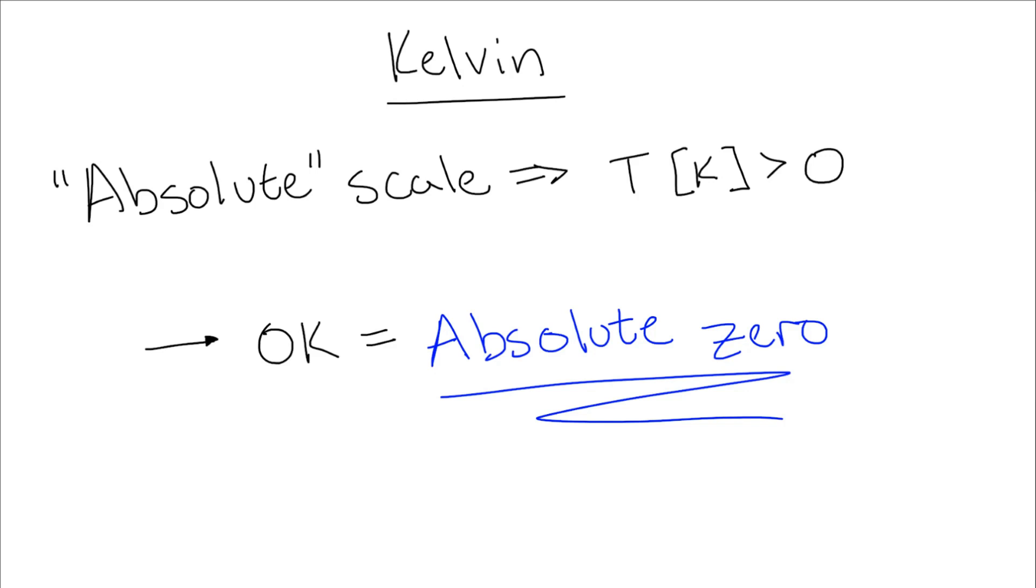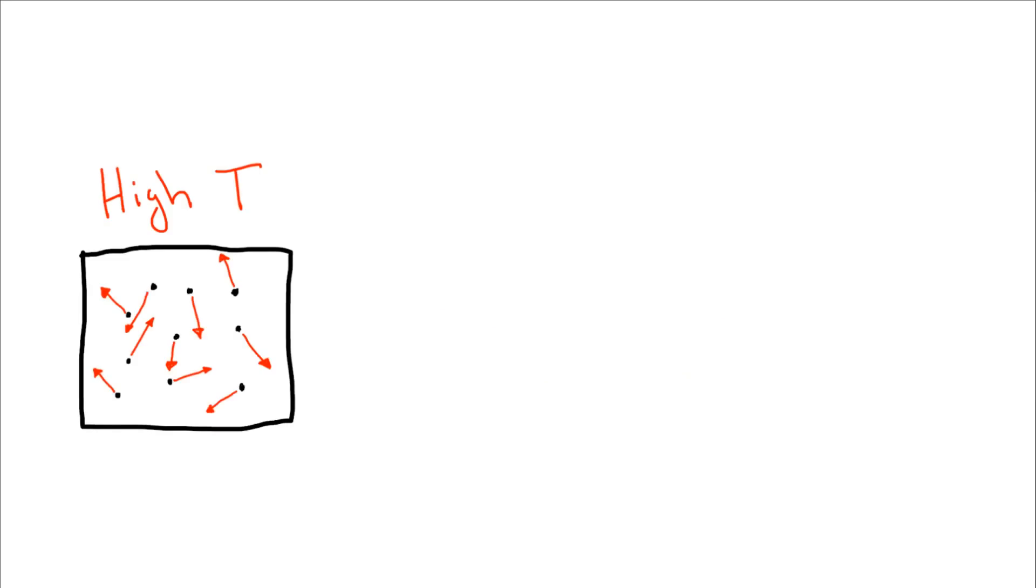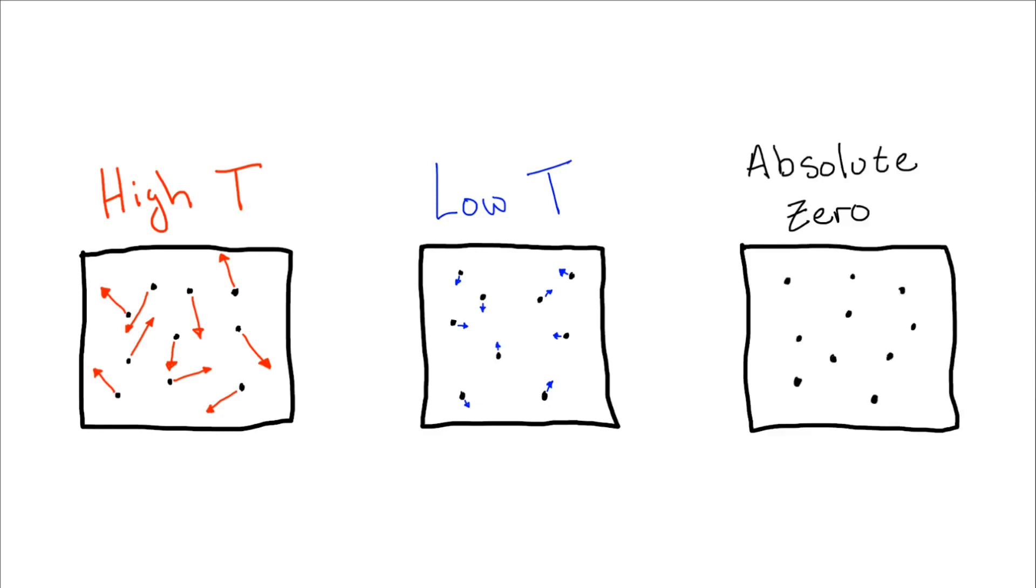But why does the scale just stop at zero? Well, usually the temperature of a system is given by the average kinetic energy of any one particle in the system, up to some constants. Absolute zero is simply when no particles have any kinetic energy. Everything is completely frozen in place, unable to move.